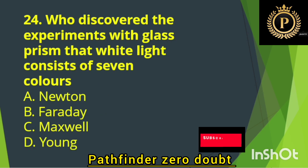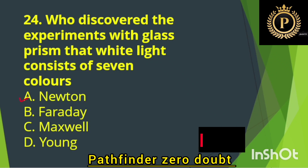Who discovered the experiment with a glass prism that white light consists of seven colors? — Option A: Newton.